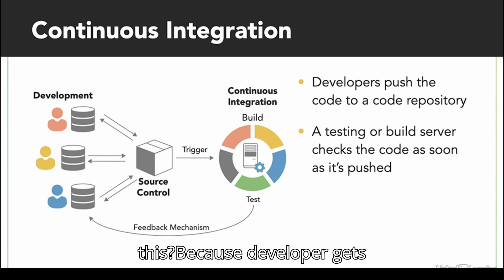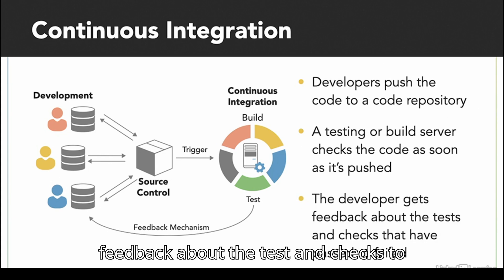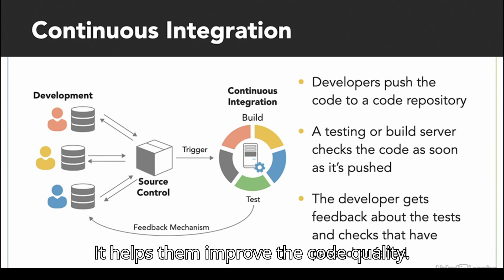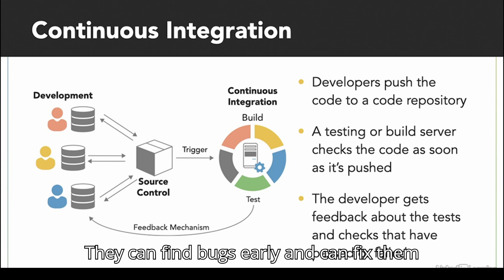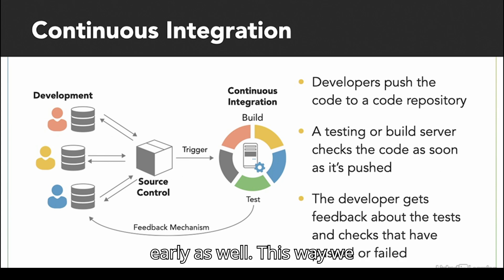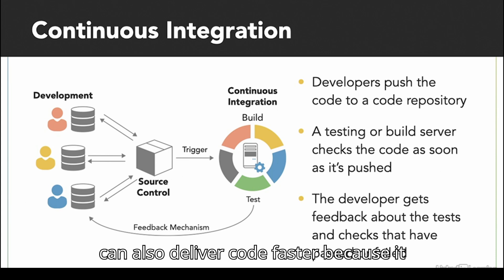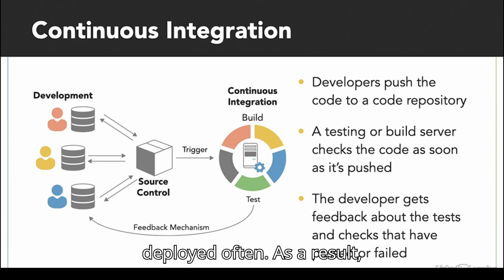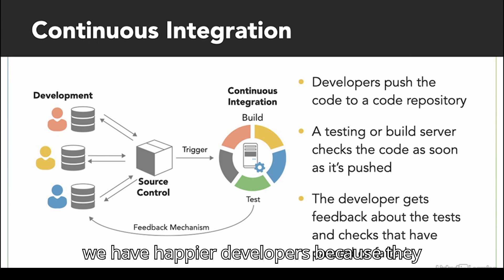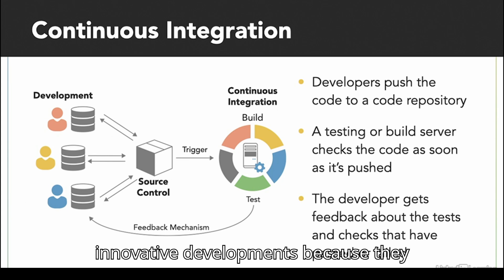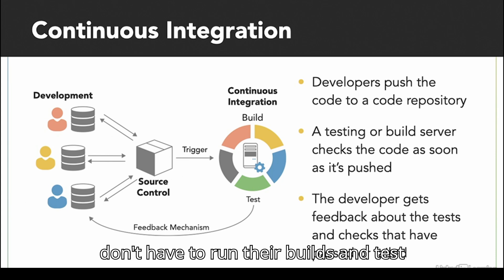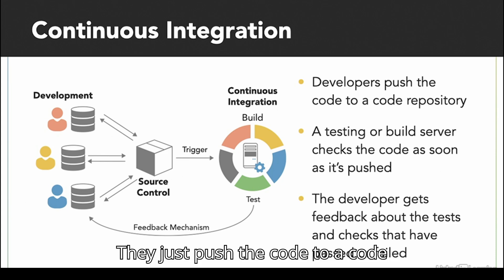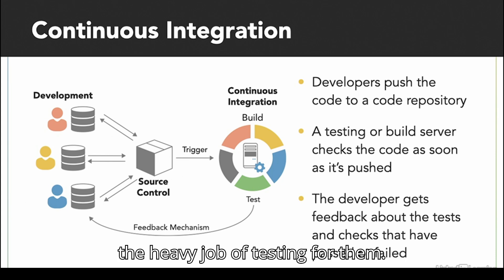Why do we do this? The developer gets feedback about tests to see if they have passed or failed, which helps improve code quality. They can find bugs early and fix them early as well. This way we can deliver code faster because it is tested continuously and deployed often. As a result, developers are unblocked and free to focus on other innovative work — they just push code to the repository and the build server does the heavy job of testing for them.